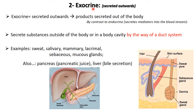Another example of exocrine secretion is the pancreas and the liver. The liver produces bile, which is secreted into the small intestine — so here the secretion is released into a body cavity rather than outside the body. The bile produced by the liver is transferred to the small intestine through ducts.